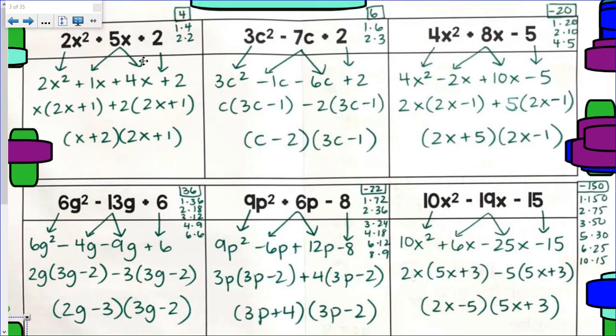If I go back, notice there's no GCF of these original three terms. And that's why our factored form is pretty clean. Like, there's nothing I could have factored out of any of these binomials.